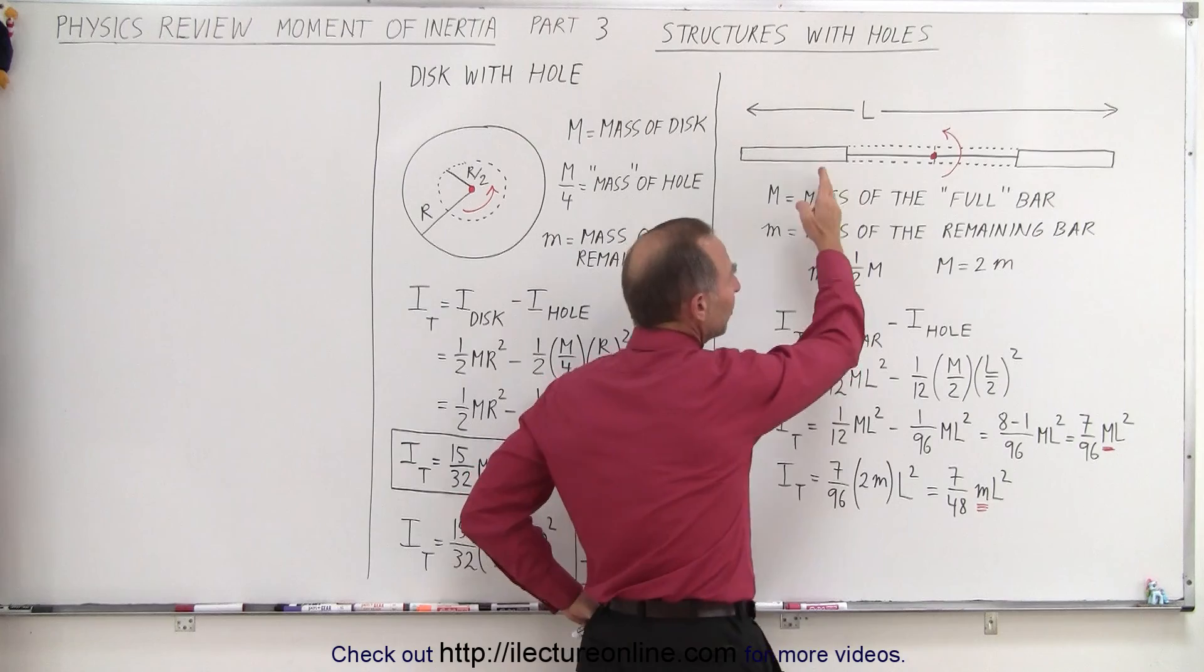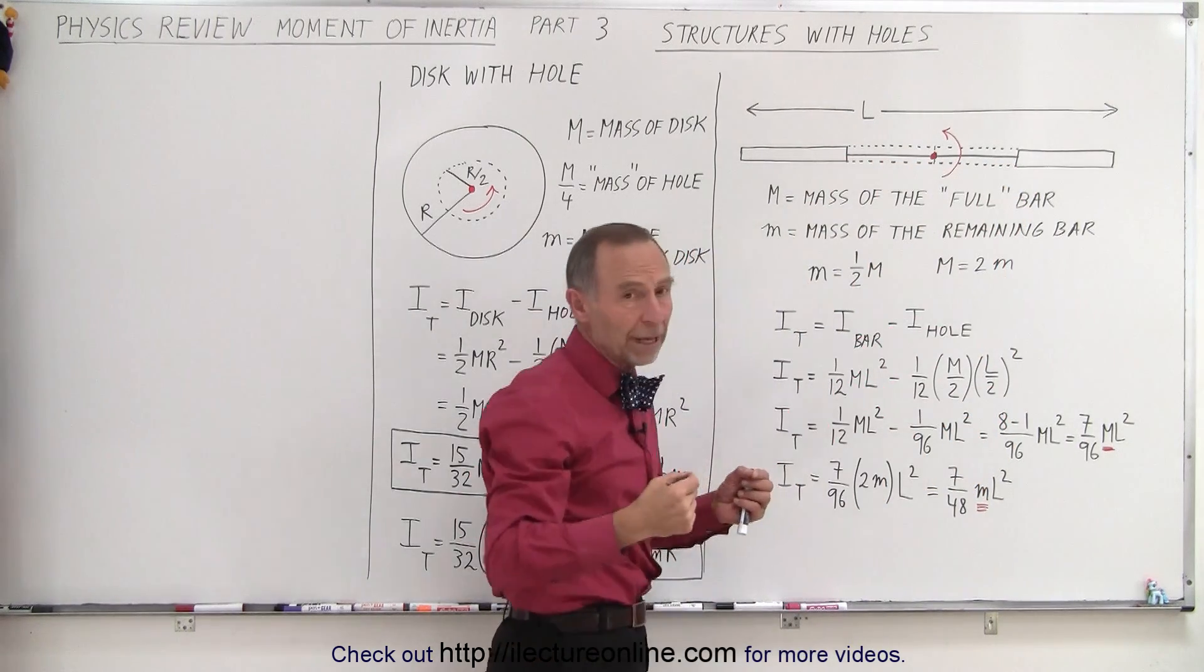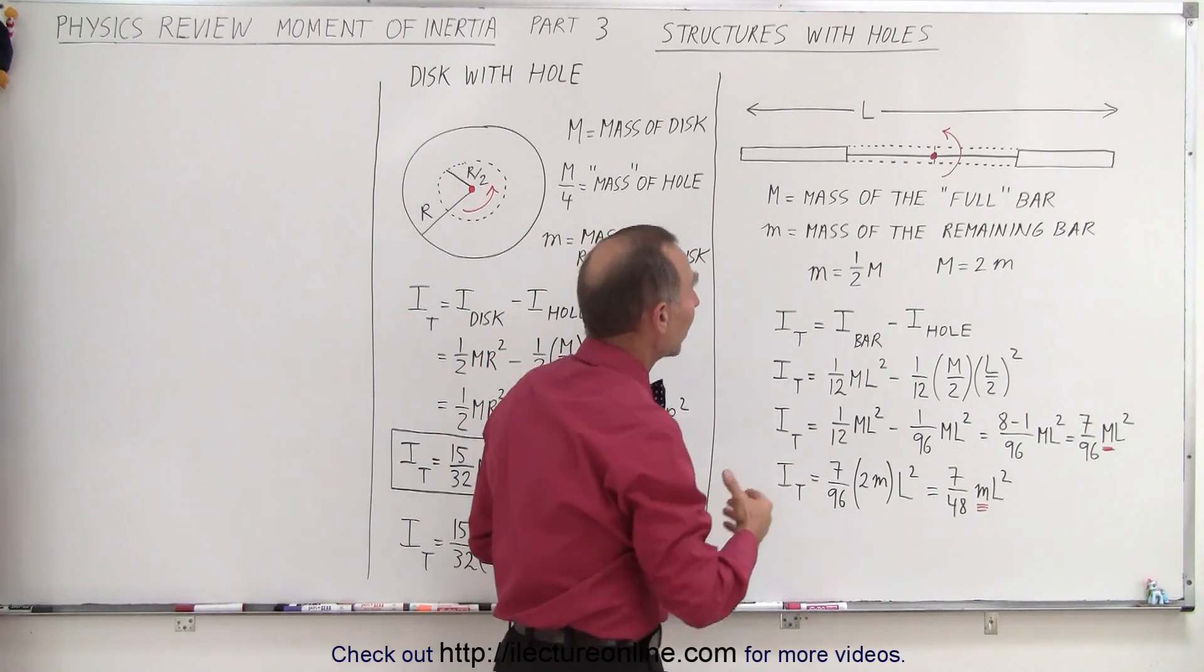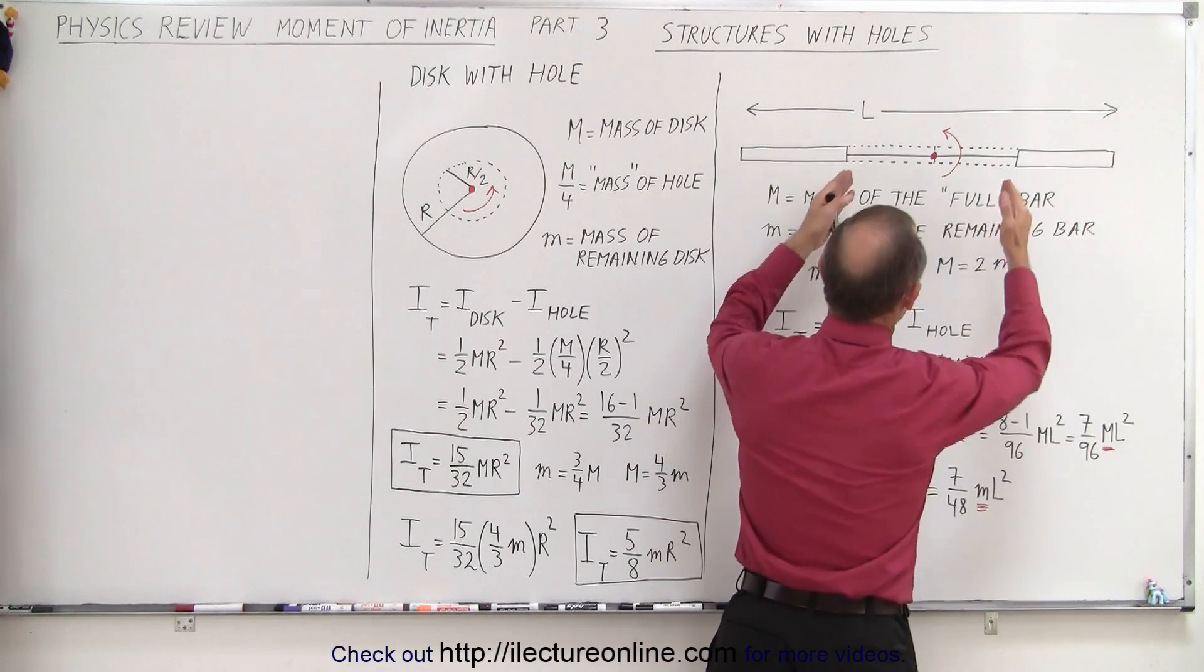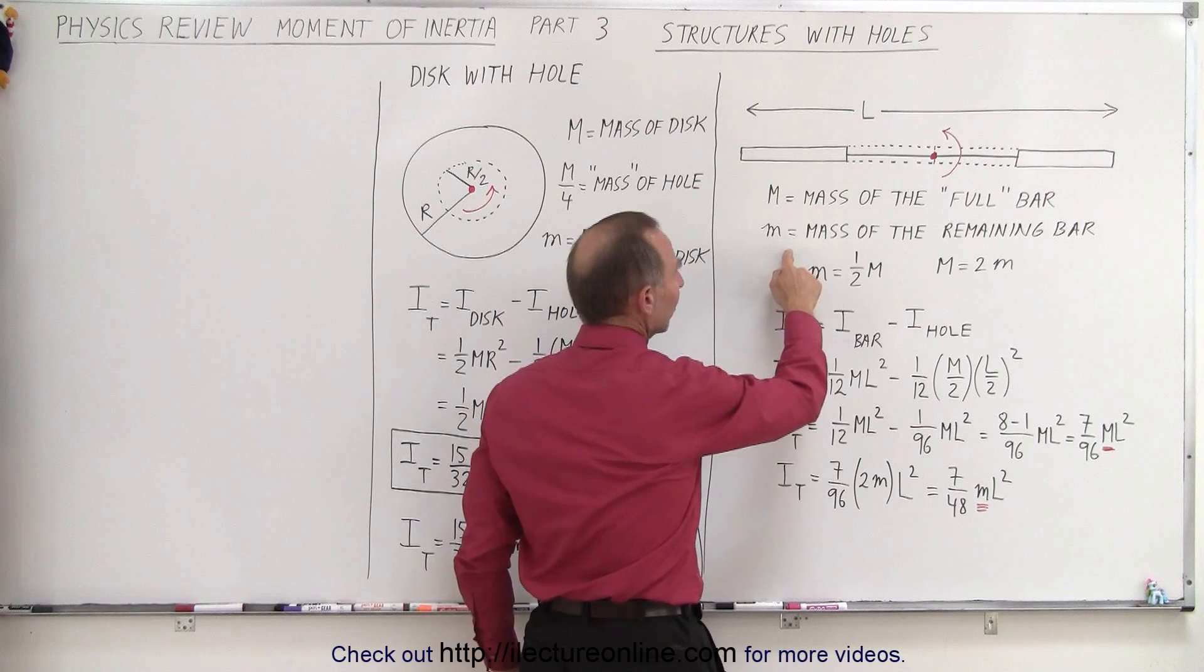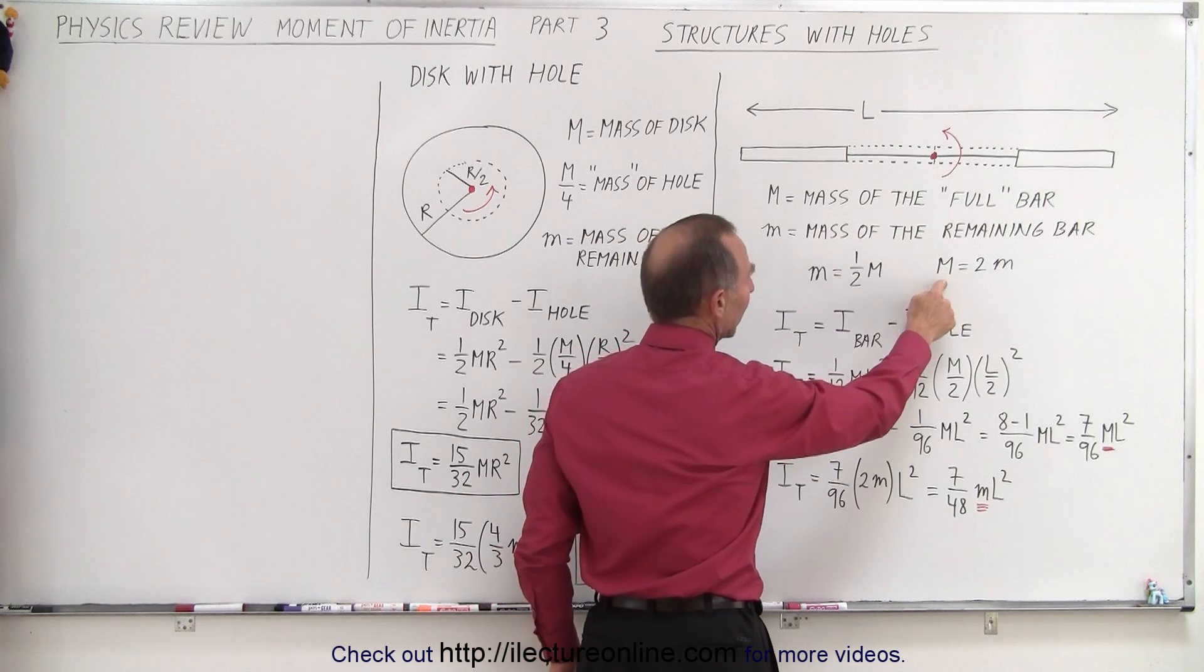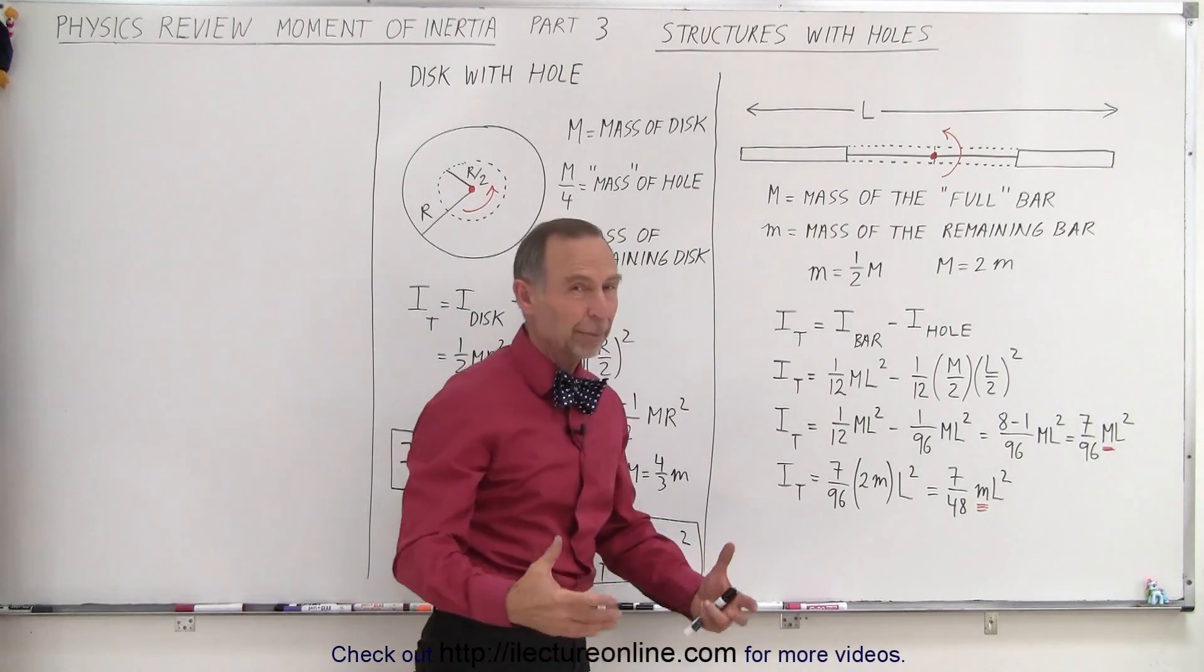Now, with this piece missing and replaced by a small thin wire or thin rod where we can ignore the mass, notice that the piece that's missing is half of the total length. So the mass that's missing is half the total mass. We can say that the mass of the remaining bar is half the mass of the total bar, or the mass of the total bar is equal to twice the mass of the remaining bar.